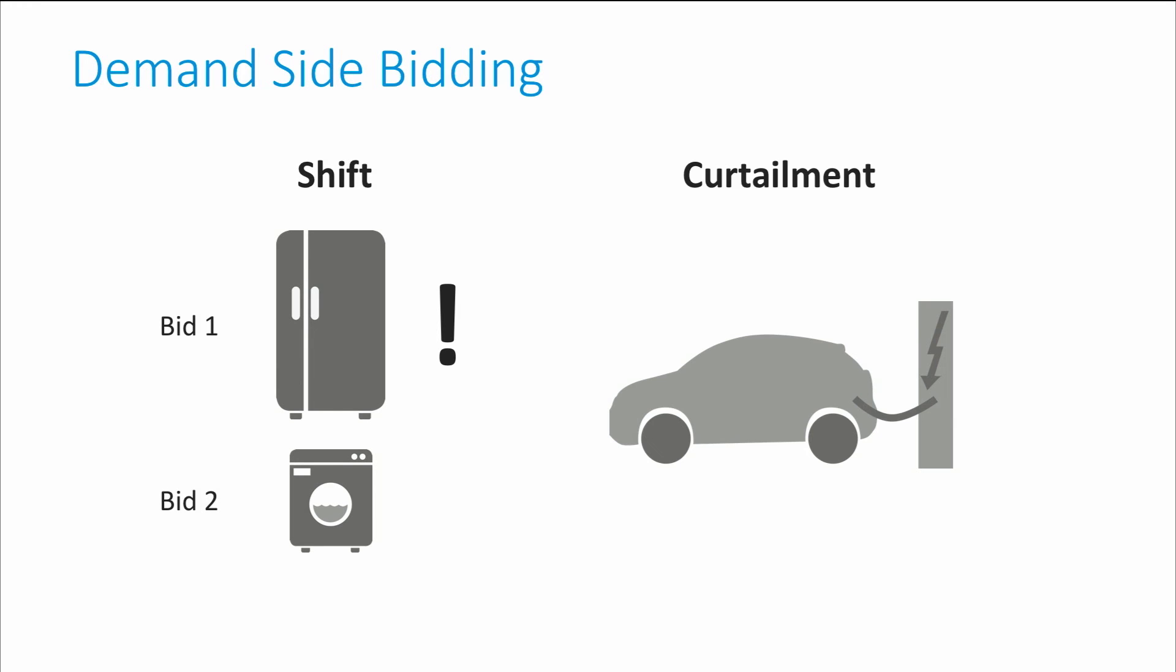In the curtailment option, consumers can offer to turn off low priority loads at fixed prices. These kinds of bids would fall under the economic optimization of the system.